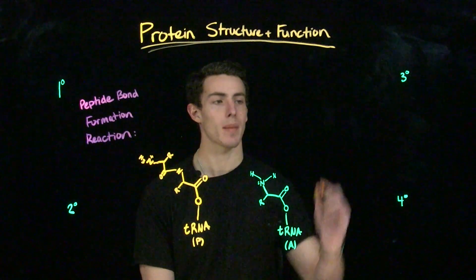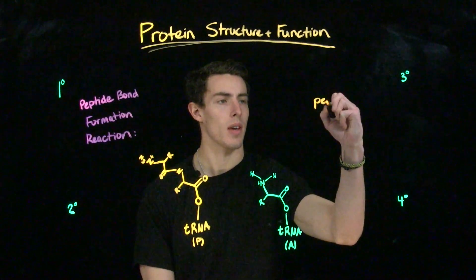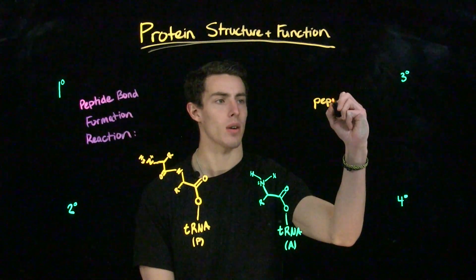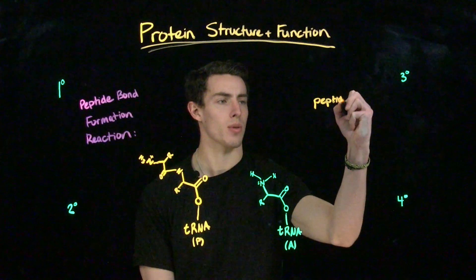This video is part two to my protein structure video. In this video, we'll be looking at the peptide bond formation that happens during translation elongation. The peptide bond formation is catalyzed in ribosomes by a special enzymatic activity called peptidyl transferase.